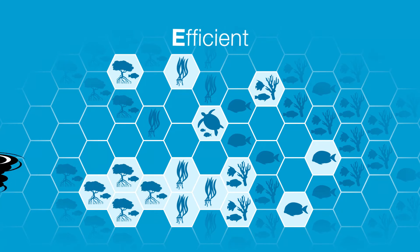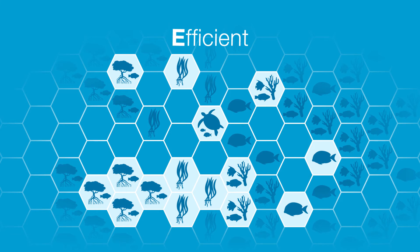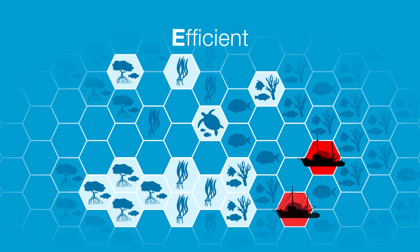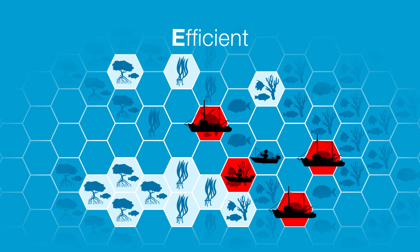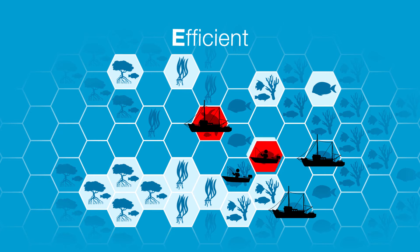A cost-effective marine reserve system is one that meets conservation objectives for connectivity, adequacy, and representation while minimizing impacts on people. This principle helps avoid conflicts between conservation and human livelihoods. Most of the time, we can make small adjustments to our conservation plan to affect fewer people and still meet our conservation goals.